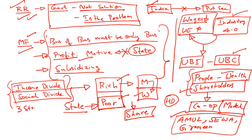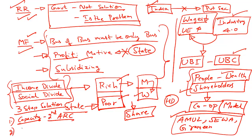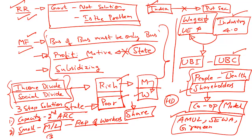In conclusion, the author suggests a three-step solution to improve India's Human Development Index. First, the state should focus on building its own capacity for service delivery — specifically implementing recommendations of the Second Administrative Reforms Commission. Second, aggregating small enterprises into medium and large-sized enterprises with better worker representation. Third, shifting from universal basic income towards the universal basic capital model, which is currently trending in international policy circles.